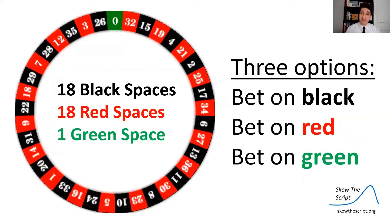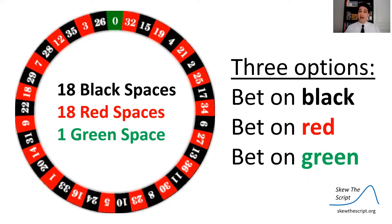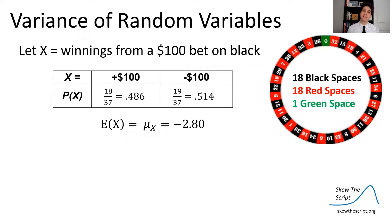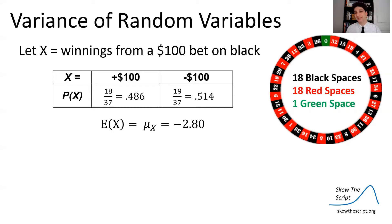Now let's talk about roulette and variance. In roulette, you spin a wheel with red, black, and one green space — we're playing the European version. Betting $100 on black: the probability of winning $100 is 18 out of 37 spaces, or 48.6%. The probability of losing is 19 out of 37, or 51.4%. This is a bad game — expected value is negative. Playing many times, your average loss would be $2.80 per play.